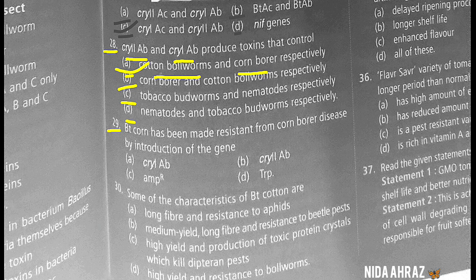Bt corn has been made resistant to corn borer disease by introduction of the gene cry1ab. So the correct choice is cry1ab.